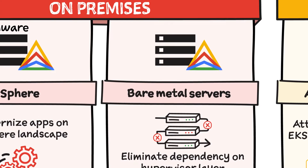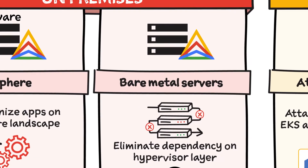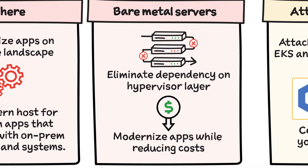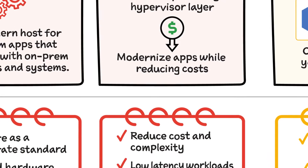Another on-premise option is Anthos on bare metal, which lets you deploy applications directly on your own hardware infrastructure. It eliminates the dependency on the hypervisor layer, and you get to modernize while reducing cost.